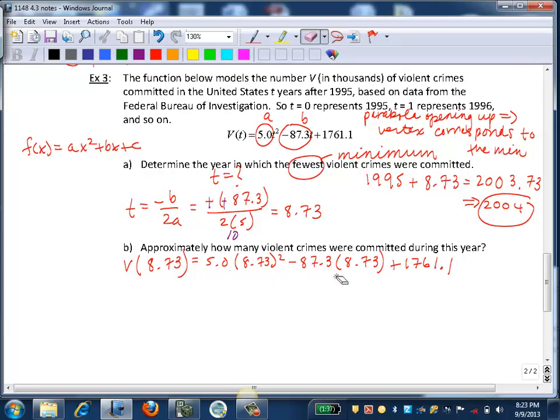So we'll plug in 5.0 times 8.73 squared minus 87.3 times 8.73 plus 1761.1. There's lots of decimals here, so I'm okay if we don't do mental math. If we enter this into the calculator, we're going to get approximately 1380. Now remember, pay attention in the problem up here, V actually represents thousands. So it's not 1380 violent crimes, unfortunately. It's actually 1,380,000. So if we add three zeros for that thousand, that will give us 1,380,000 violent crimes.